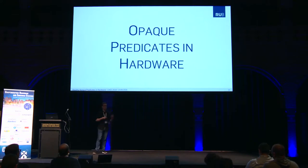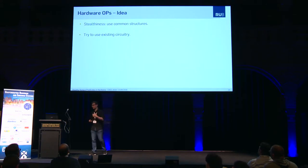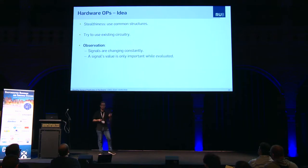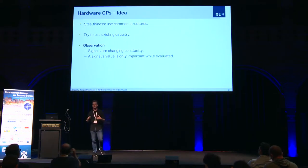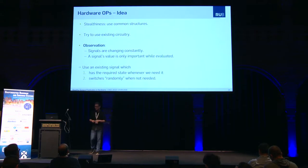So now let's talk about the main contribution: the opaque hardware predicates. We want to be stealthy. The idea is we use common structures — unlike Sergeitschik et al. — so we cannot be detected or distinguished as easily. We try to use existing circuitry, because if we use existing circuitry we don't add new modules, so how can anyone distinguish? The observation we use here is that in hardware, signals constantly change their values — they are switching all the time. In software you only have changing values if you compute something and store it to a register. But in hardware, all combinatorial circuits where the inputs change also switch. However, the output value is only evaluated if it reaches a flip-flop that is enabled. If the flip-flop is not enabled, the signal can change arbitrarily — it doesn't matter. This is exactly what we use.